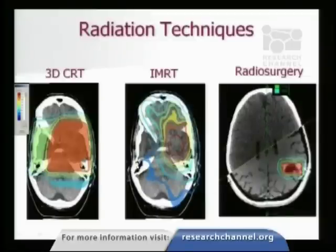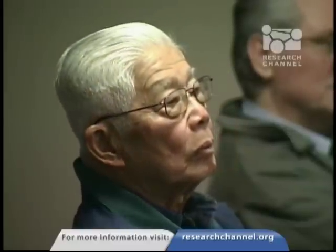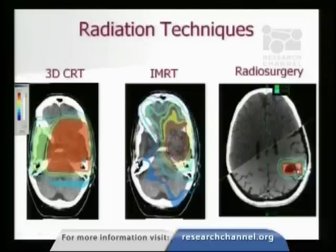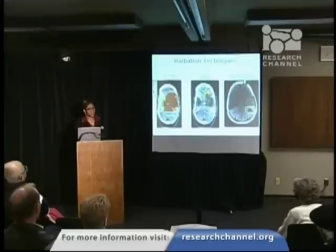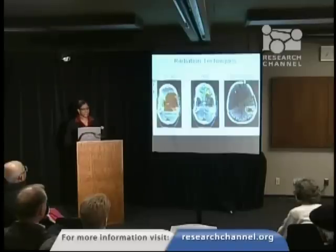With stereotactic radiosurgery, we're actually able to take that one step further in the particular situation where it makes sense. This treatment shows how we can conform the radiation dose very, very precisely. The red area represents the tumor site; the green line represents the dose we want to give; the blue line represents a lower dose, usually about 50% less than the dose at the center of the target. Large portions of the brain are very much spared from radiation dose using radiosurgery — though we can't apply this to every single tumor type.